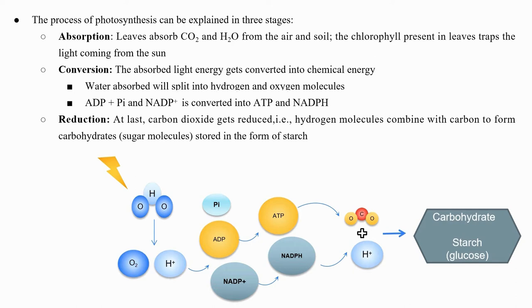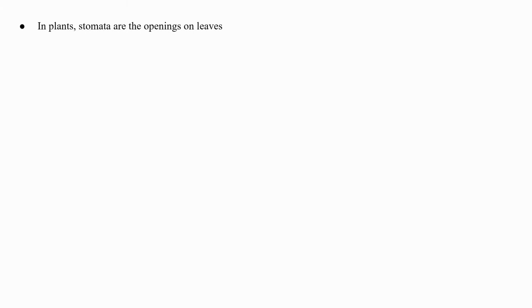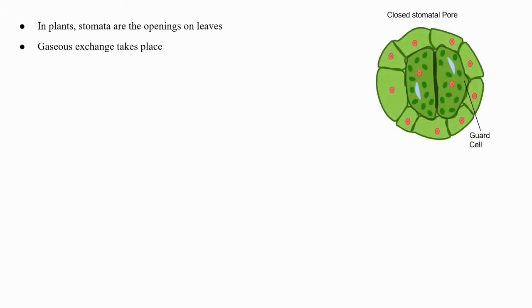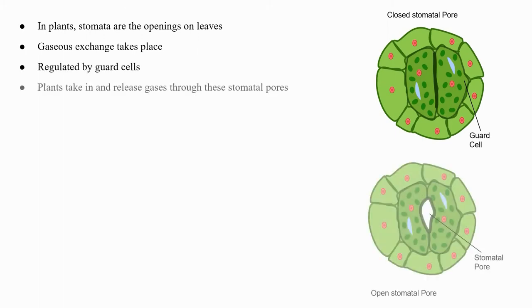All three events are not a continuous process; they may or may not take place sequentially. In plants, stomata are the openings on leaves where gaseous exchange takes place and is regulated by guard cells. Plants take in and release gases through these stomatal pores.